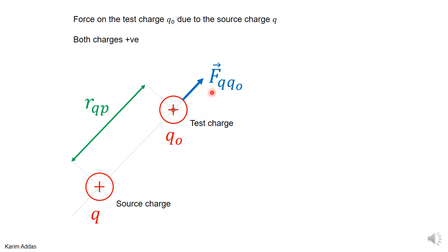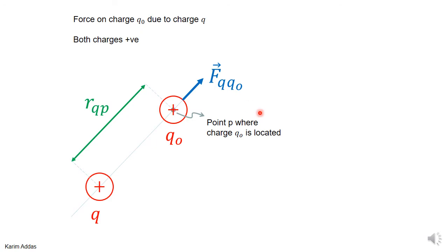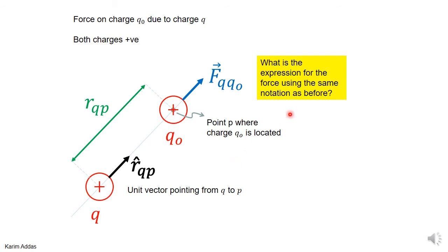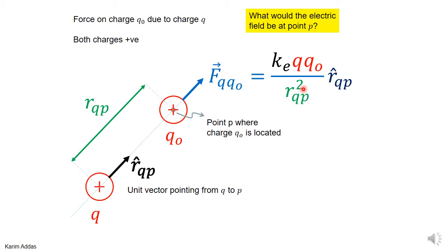Let's start by looking at the force itself. If we define the distance between Q and Q₀ to be R_QP, where P is the point where we want to find the electric field, then the force F on Q₀ due to Q means the force on Q₀ due to Q. As before, the force is KE·Q·Q₀ over R_QP squared, with Q and Q₀ carrying their signs, multiplied by the unit vector pointing from charge Q to point P.